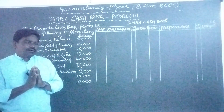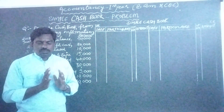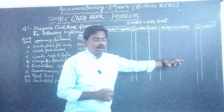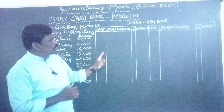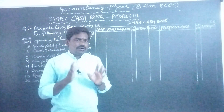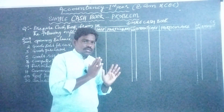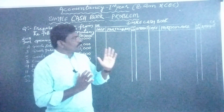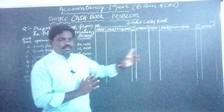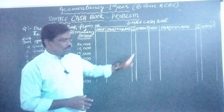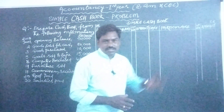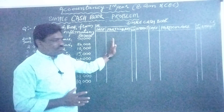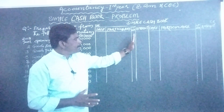So after identifying credit transactions and cash transactions, credit transactions should be omitted — we should not consider them. That is the second step. For the third step, we have to prepare a simple cashbook proforma. The cashbook is similar to a ledger account — it looks like a ledger account — so it must have a debit side and a credit side. On the debit side there are four columns: date, particulars, ledger folio number, and amount.